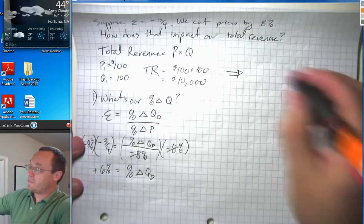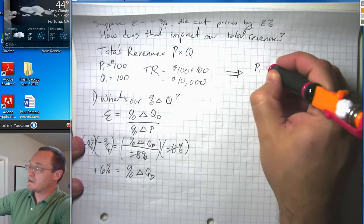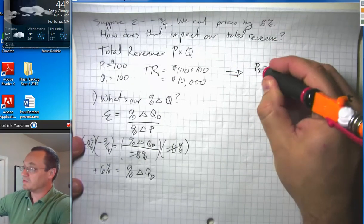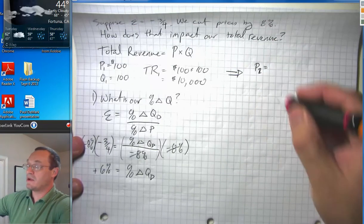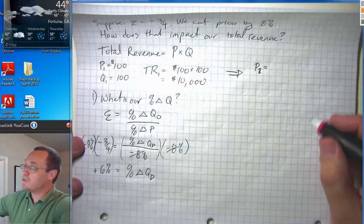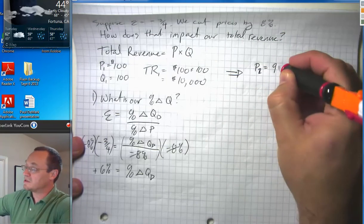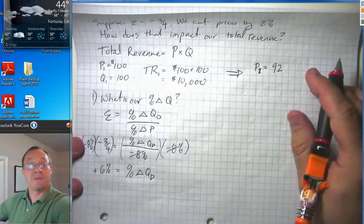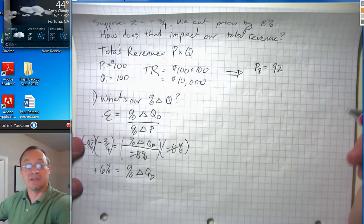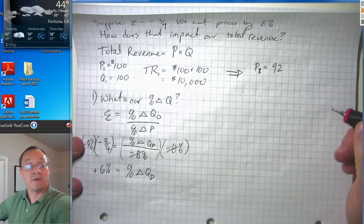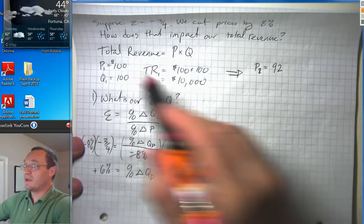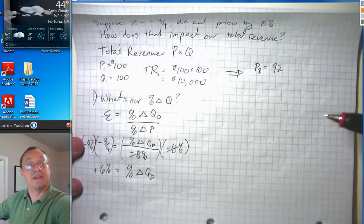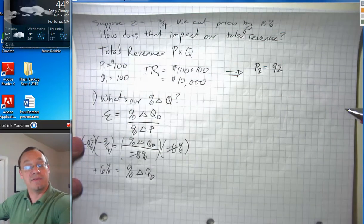So if we originally had a price P1 of a hundred bucks, and we cut our prices by eight percent, then our new price is eight percent lower, or ninety-two dollars. You can go back and actually apply the percentage change formula formally if you want, but the nice way that I picked these numbers makes it easy to see what the new level of P2 would be.